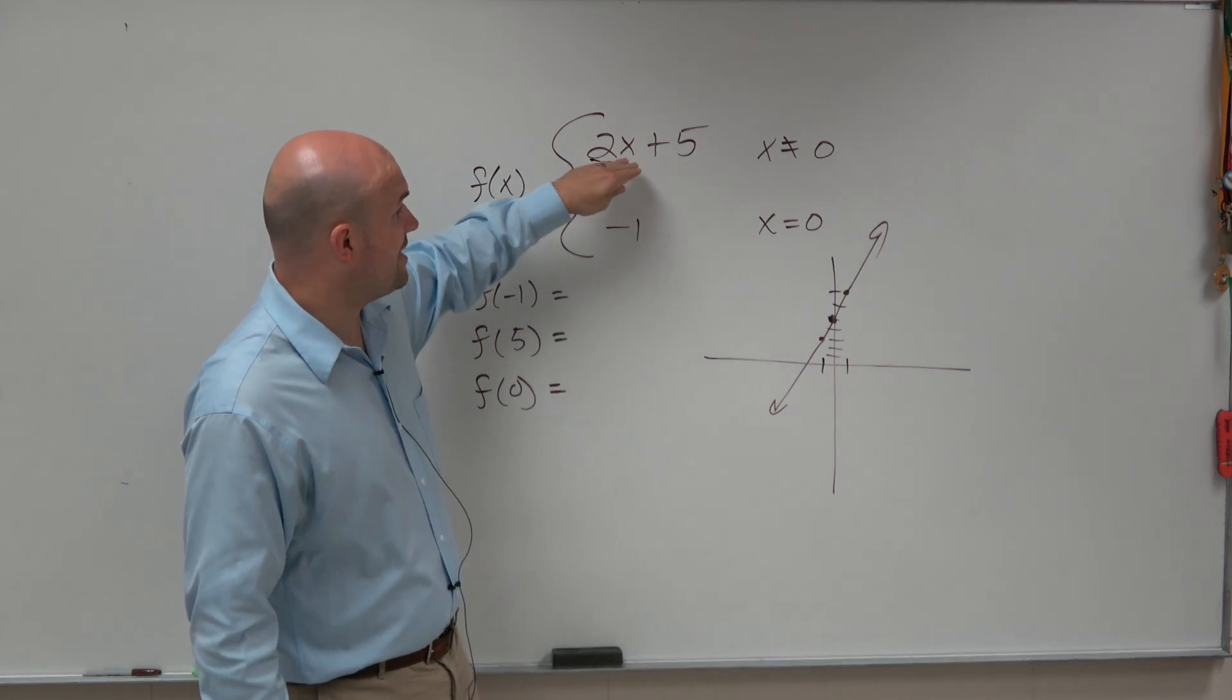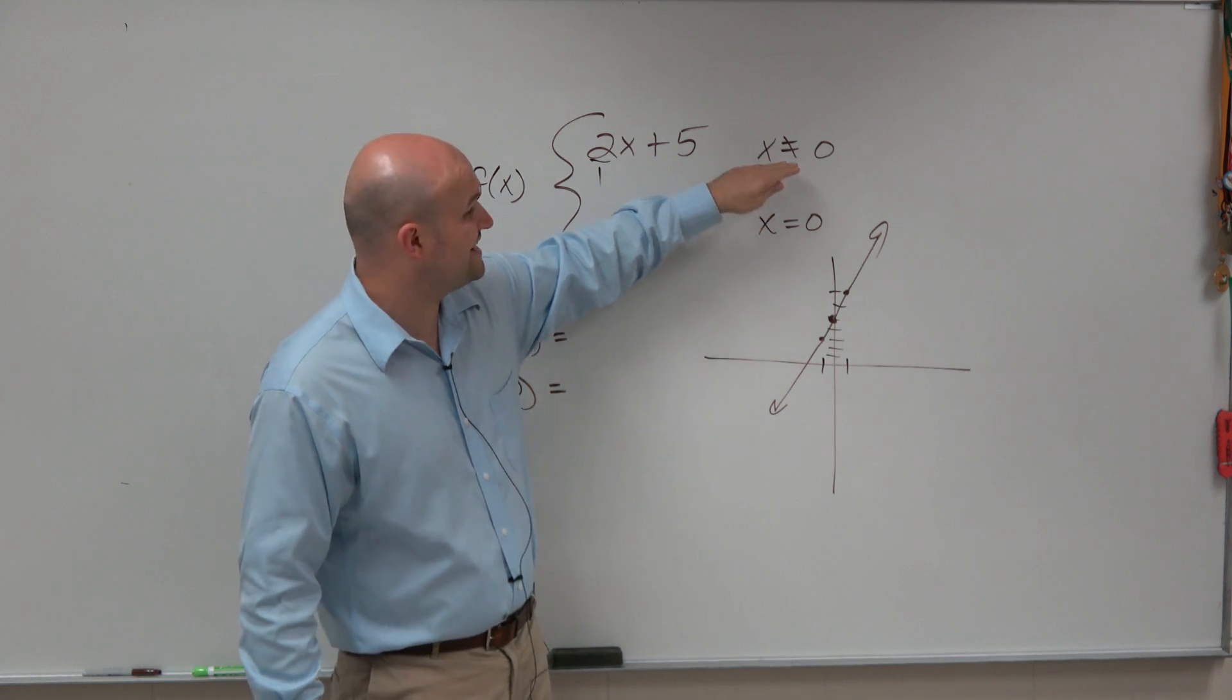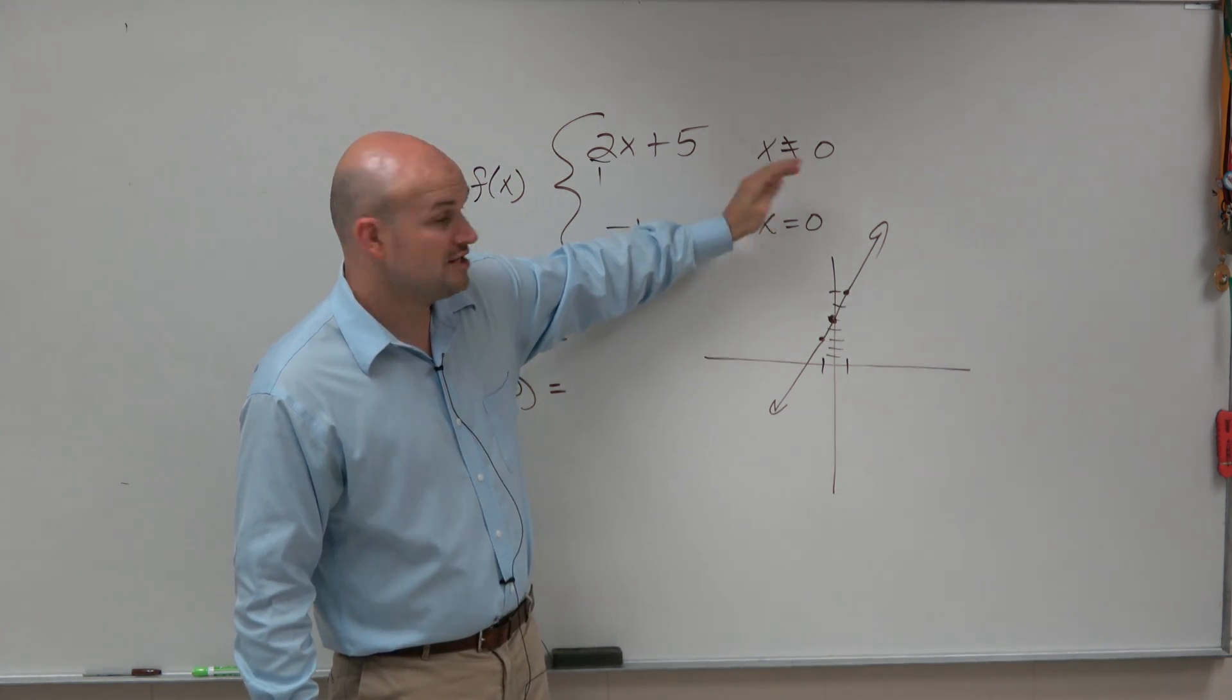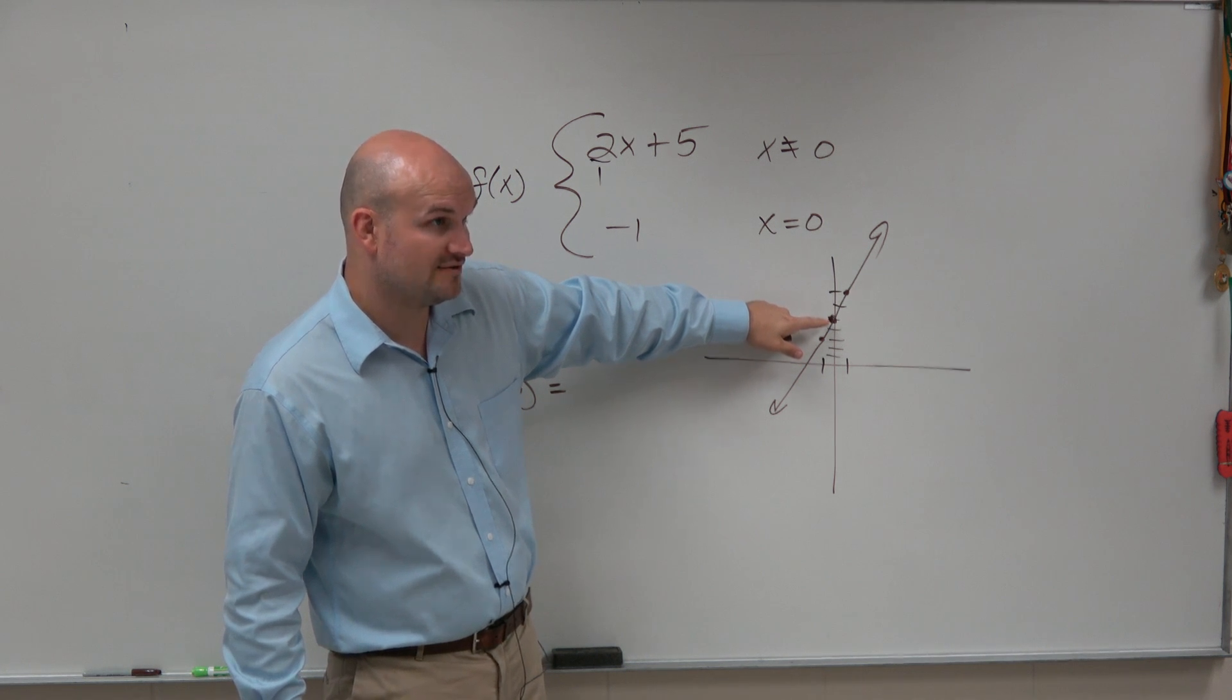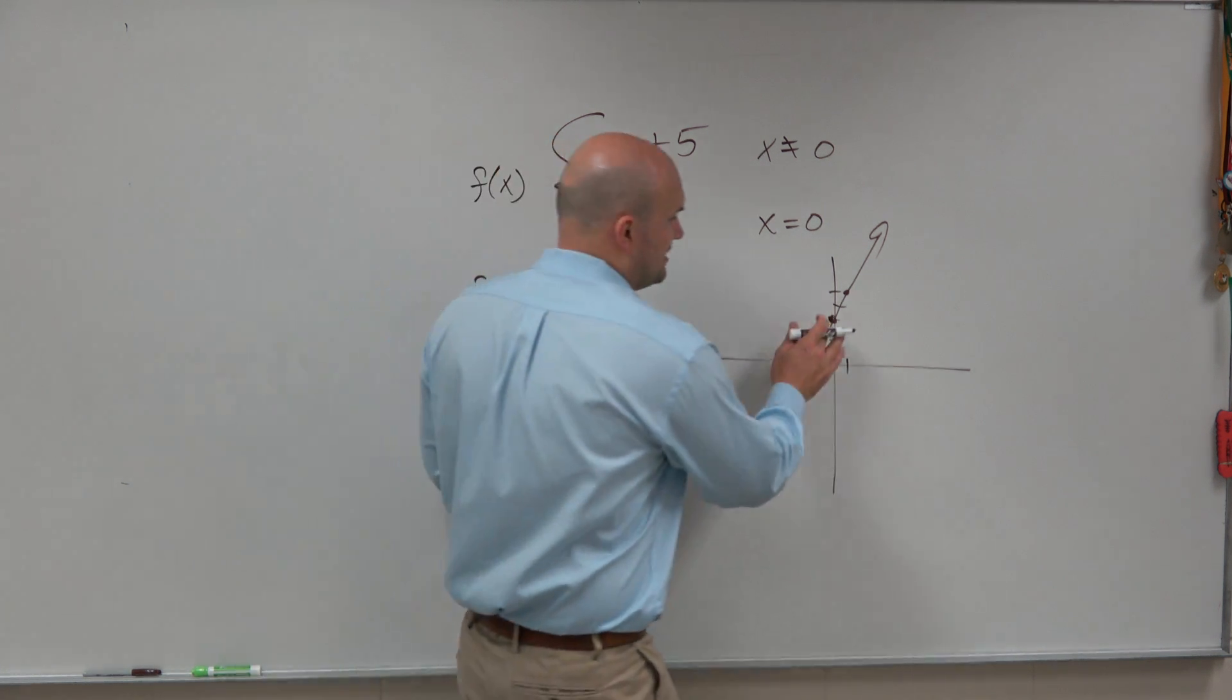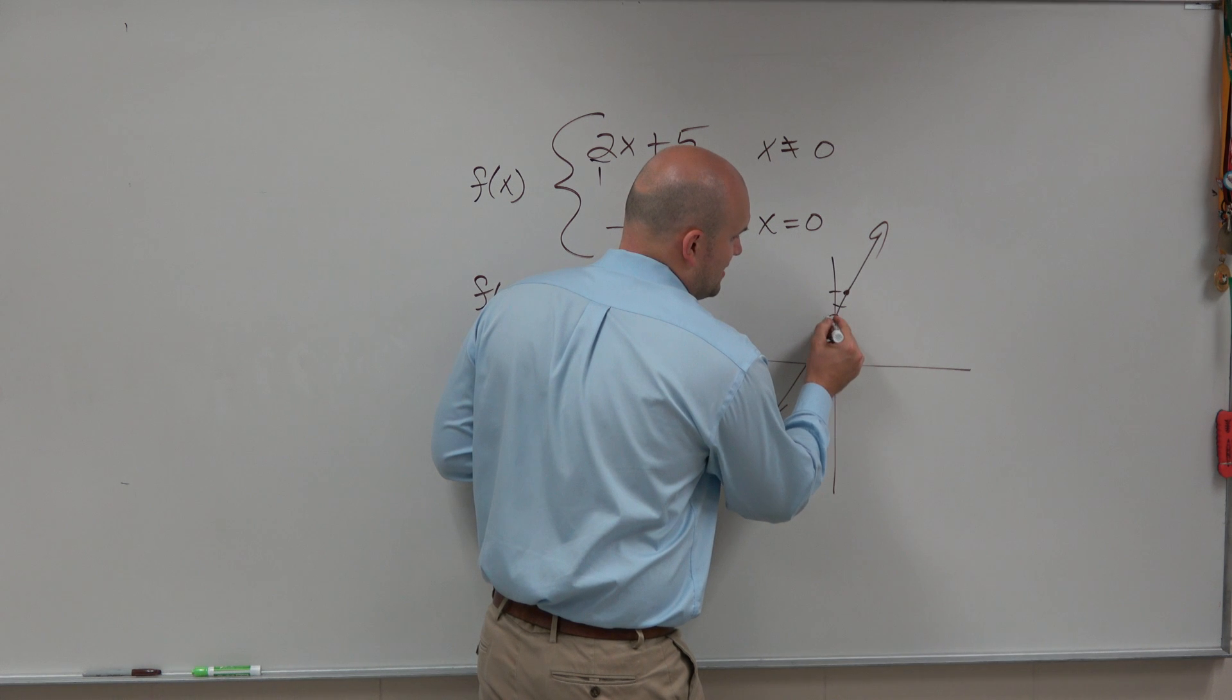However, if we look at this, it says graph this function, but for all values except when x equals 0. So even though we know at 0 there's that intercept of y equals 5, when we look up here on the board, we can see that that's actually going to be represented as a hole.